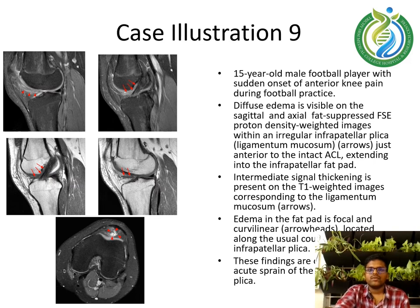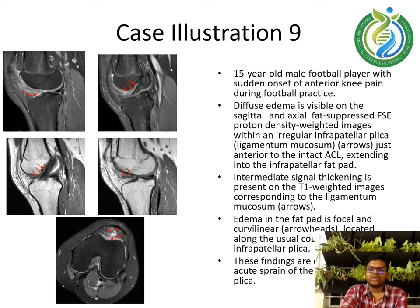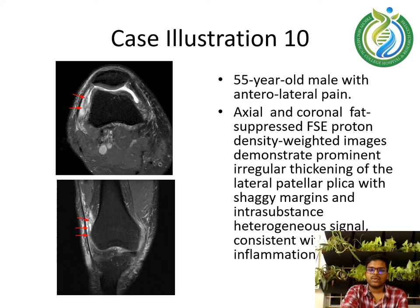Case illustration 9: a 15-year-old male football player with sudden onset of anterior knee pain during football practice. Diffuse edema is visible on sagittal and axial fat-suppressed FSE proton density weighted images within an irregular infrapatellar plicae, ligamentum mucosum, just anterior to the intact ACL, extending into the infrapatellar fat pad. Intermediate signal thickening is present on T1-weighted images corresponding to the ligamentum mucosum. Diffuse edema in the fat pad is focal and curvilinear, shown by the arrowheads, along the usual course of the infrapatellar plicae. These findings are consistent with an acute sprain of the infrapatellar plicae.